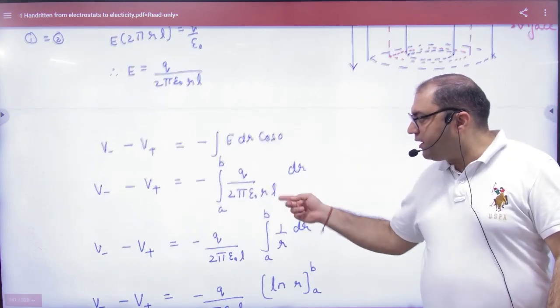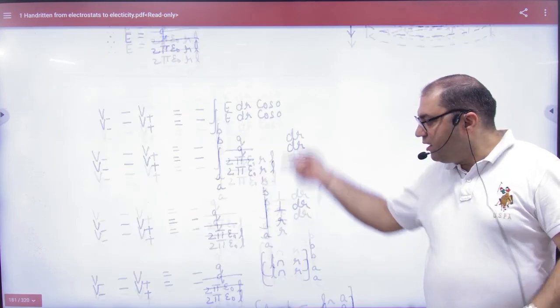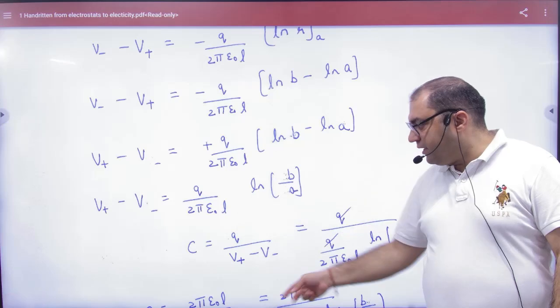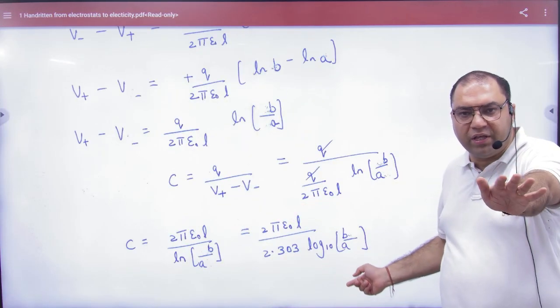Potential difference will come out. E will come out. Potential difference will divide from charge. So the answer will come. Don't do anything - the derivation will not come in the exam.